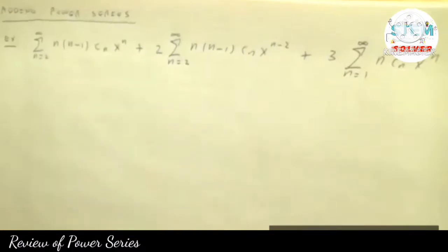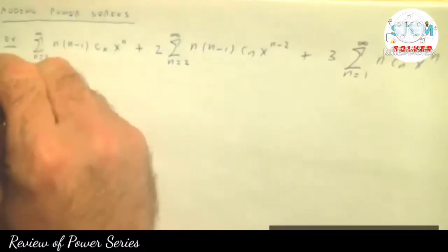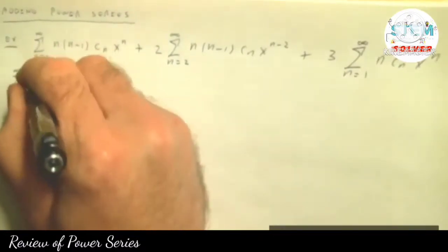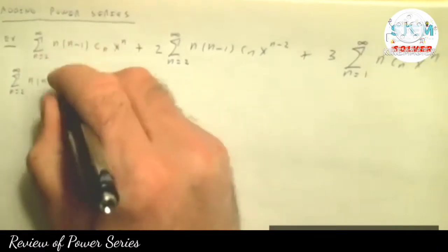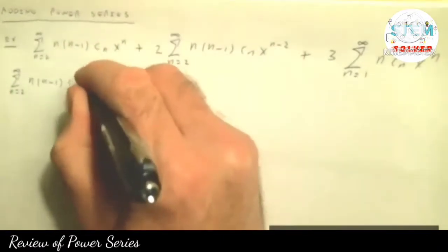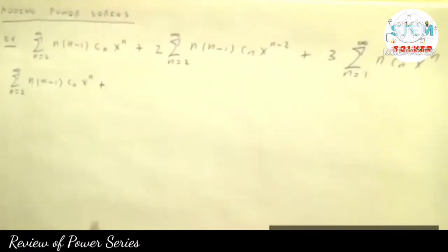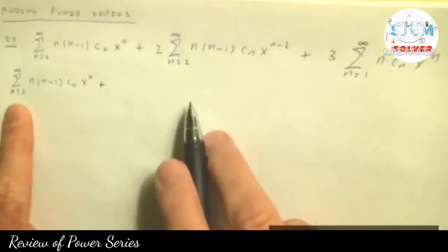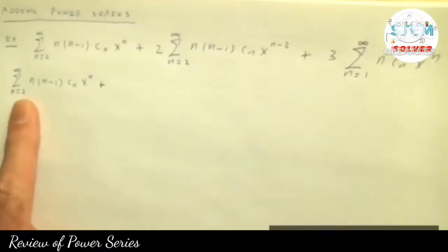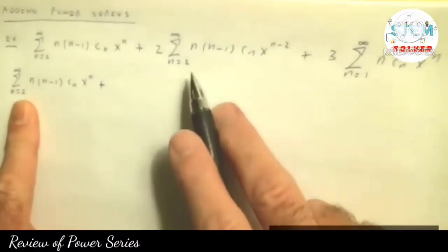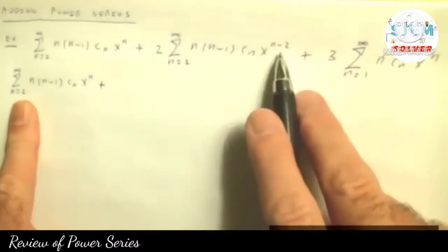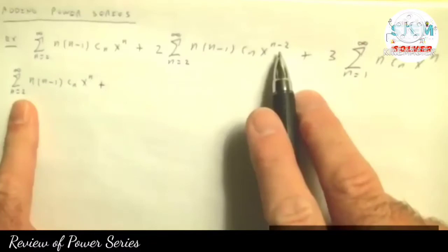The first one starts at x squared, so we're going to leave it that way. On the second one, the highest power was x squared on the first one. The second one starts out at x to the 0, so you would have to do what's called running out two terms — x to the 0 and x to the 1st — before you get to x squared.